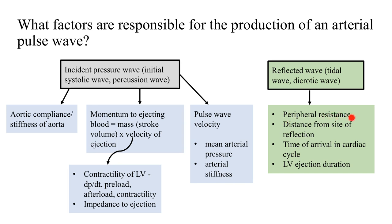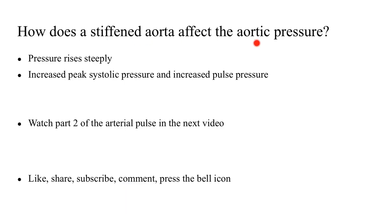What factors affect the reflected waveforms that return from the periphery back to the heart? Number one is peripheral resistance. Second is the distance of the site of reflection from the heart. Third is the time of arrival in the cardiac cycle — if it arrives in systole it gives rise to a tidal wave; if it arrives in diastole it gives rise to a dicrotic wave. Fourth is the duration of left ventricular ejection. Regarding how a stiffened aorta affects aortic pressure: the pressure rises steeply because the aorta is no longer compliant or elastic and is no longer able to relax in order to accommodate all the stroke volume during the systolic phase. This leads to an increased peak systolic pressure and an increased pulse pressure. Watch part 2 of the arterial pulse in the next video, which will go into the details of all the factors affecting the incident wave as well as the reflected wave.